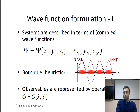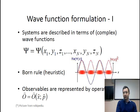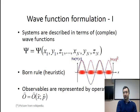Observables in this formulation of quantum mechanics are represented by operators, which is a very big departure from Newtonian or classical mechanics where observables are actually numbers that you measure. In classical mechanics the correspondence between the mathematics and the experimental measurements is straightforward, while in the Schrödinger formulation this connection is not simple anymore — you have observables and you must find an operator which represents them.